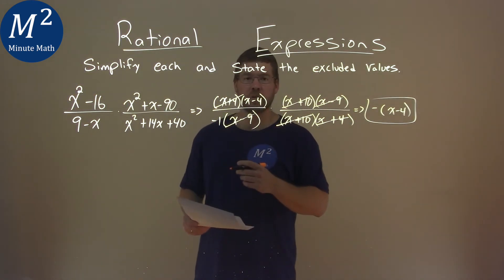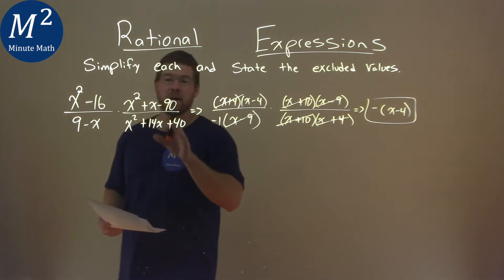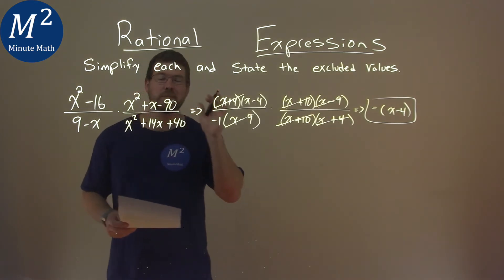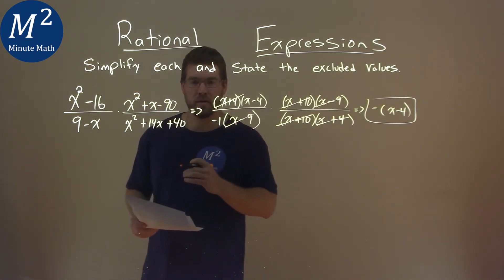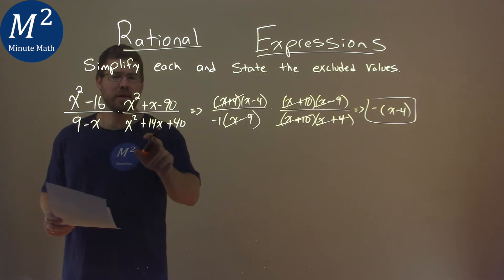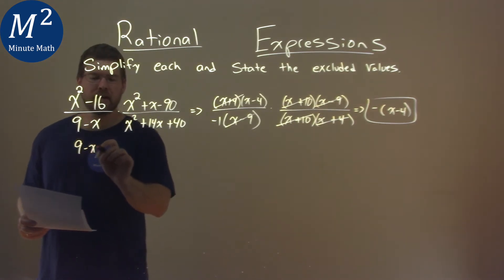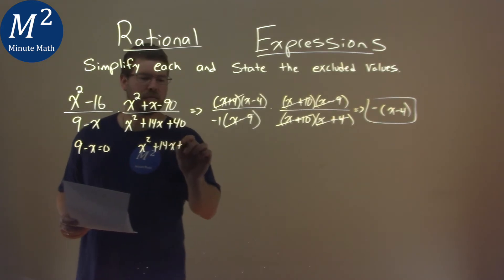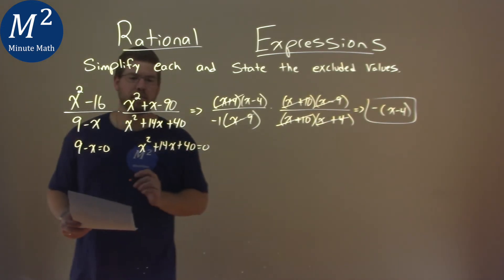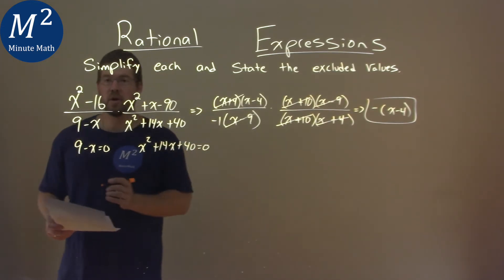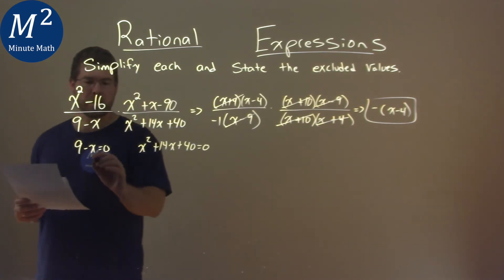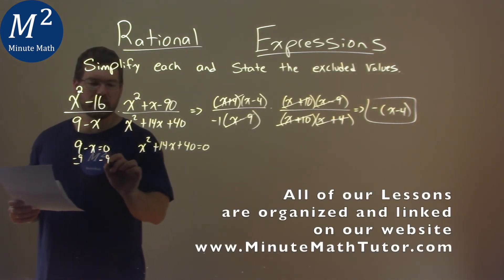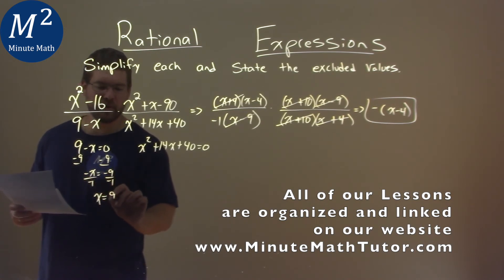But now we have to find our exclusion values, and that is when our denominator is equal to 0. We have to find what x values cause them. So here we look at the beginning. We set our 9 minus x equal to 0. And now we're going to solve for x. We'll subtract 9 to both sides here. We have negative x equals negative 9. Divide both sides by negative 1, and x equals positive 9. Not too bad.